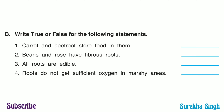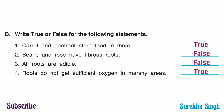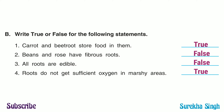Question B. Write true or false for the following statements. 1. Carrot and beetroot store food in them. True. 2. Beans and rose have fibrous roots. This statement is false because beans and rose have tap roots. 3. All roots are edible. False — all roots are not edible. 4. Roots do not get sufficient oxygen in marshy areas. True.